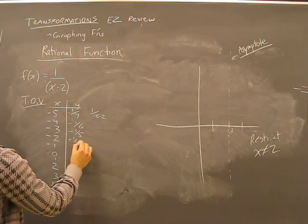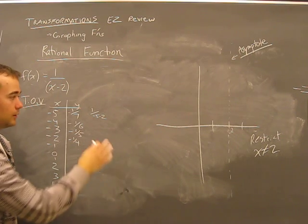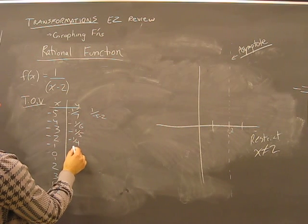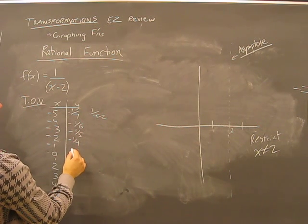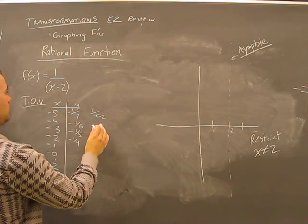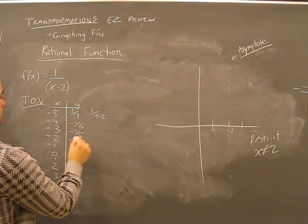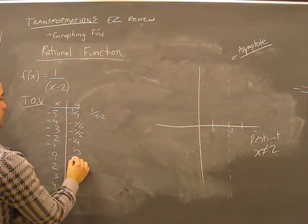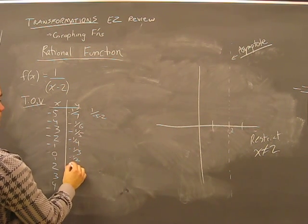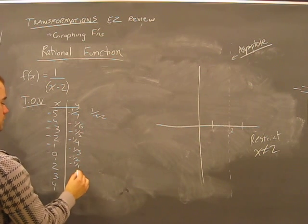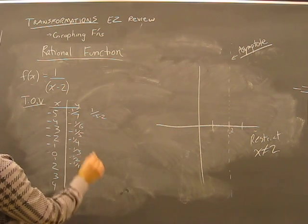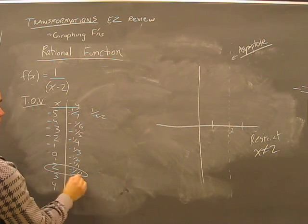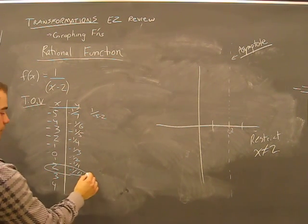One over negative seven. This would be negative one-seventh, negative one-sixth, negative one-fifth, negative one-fourth. You can figure this out on your own here, just trust me on this. Negative one-third.